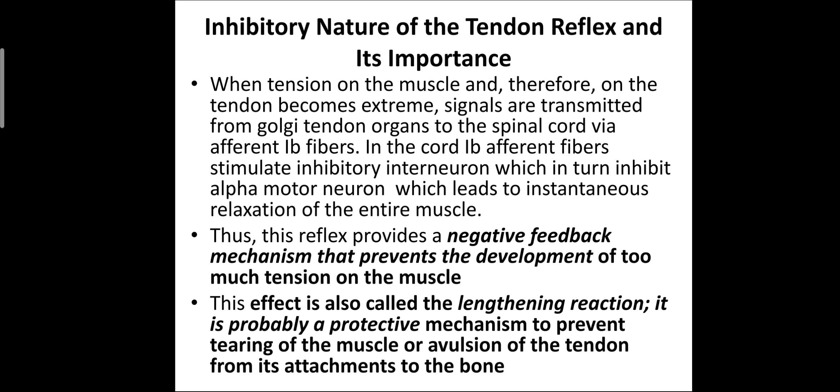The inhibitory nature of the tendon reflex: when the tension on the muscle and on the tendon becomes extreme, signals are transmitted from the Golgi tendon organs to the spinal cord via the afferent 1B fibers. In the cord, 1B afferent fibers stimulate inhibitory interneurons which in turn inhibit the alpha motor neurons, leading to relaxation of the entire muscle. This reflex provides a negative feedback mechanism that prevents the development of too much tension in the muscle.